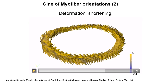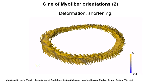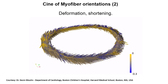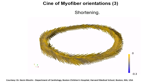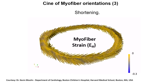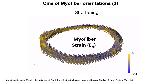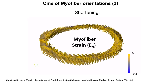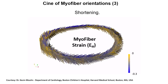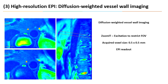Here is just the deformation and shortening. And here, looking at fiber shortening only — this is color encoded. This is one of the advantages on the horizon, and one that SEMA is well positioned to further develop.